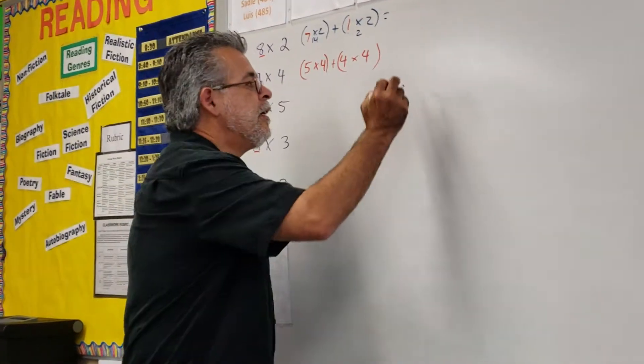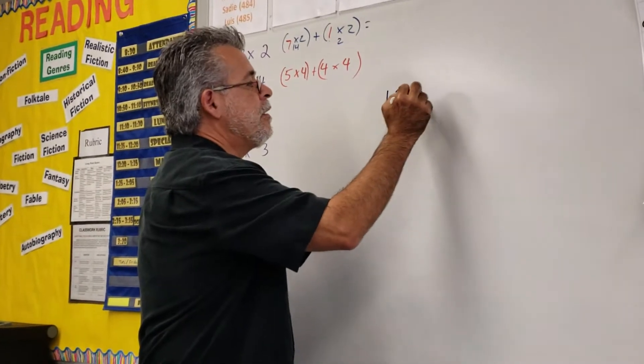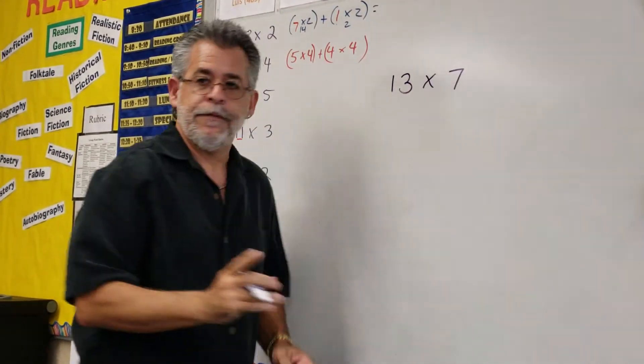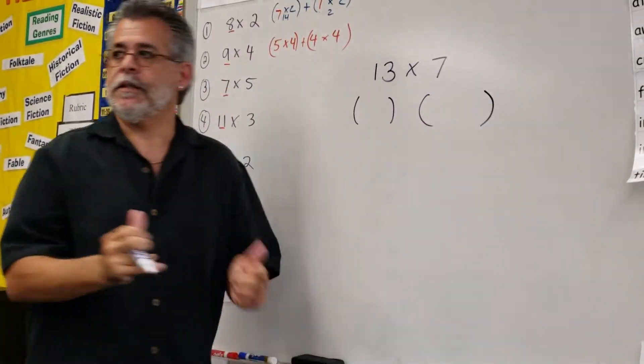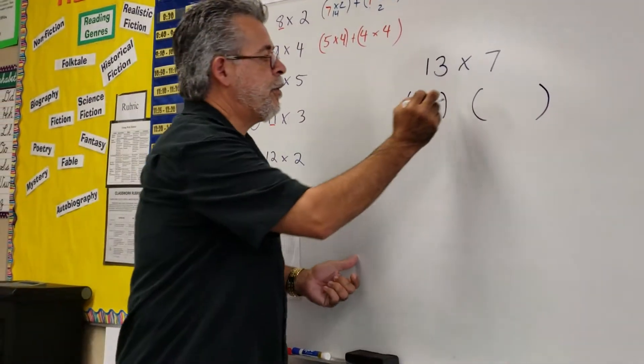So there's a quick review on distributive property. Suppose we had 13 times 7. The first thing you want to do is break this up into two sets of brackets like this. Easy or hard? Easy. Then you put the plus sign.